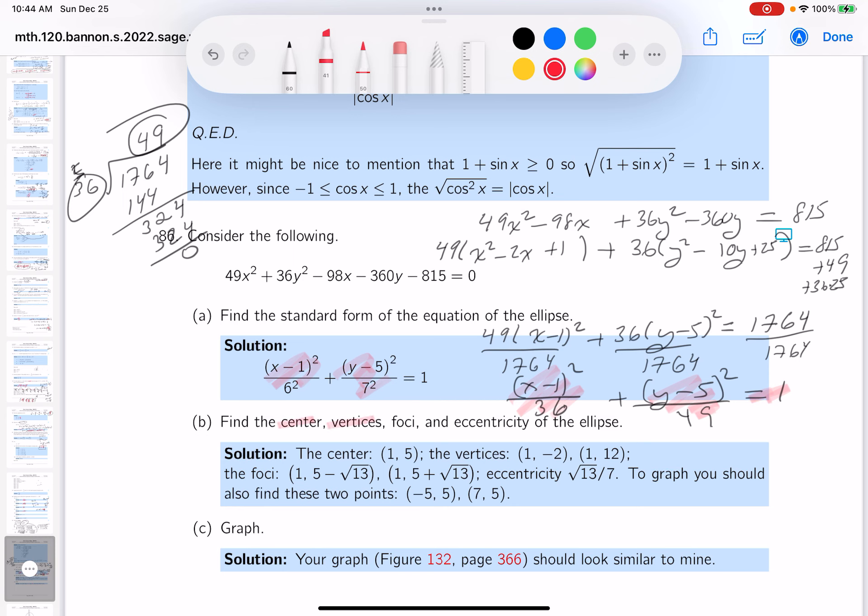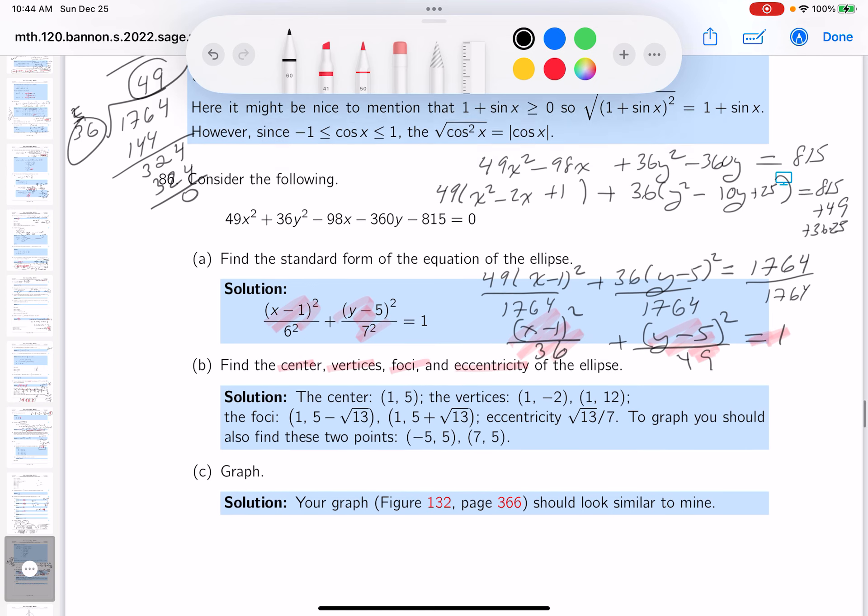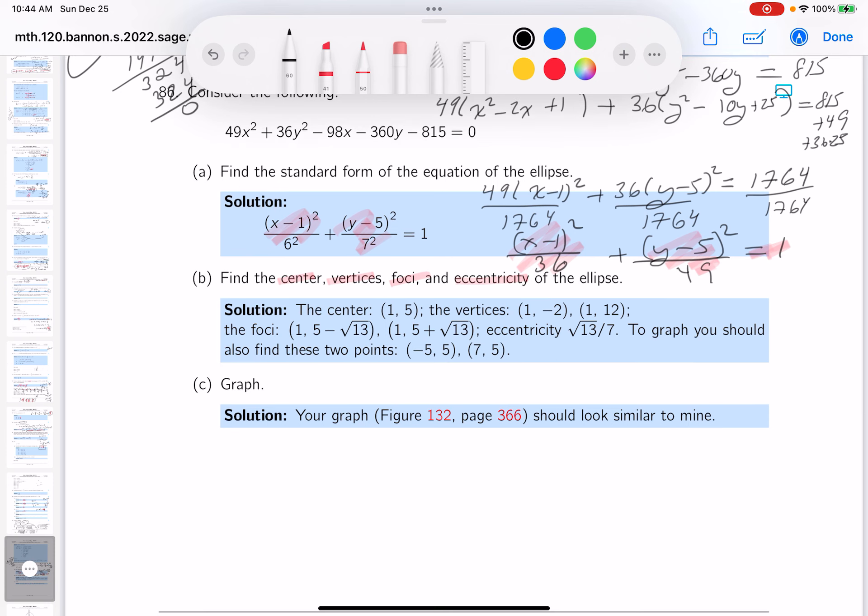Let's write this down. So the center, relatively simple to write down, is going to be 1, 5.